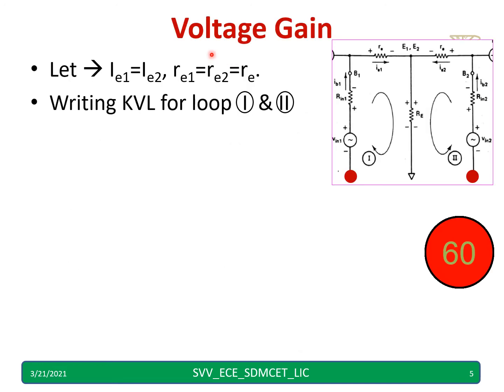Voltage gain equation will derive. Let us assume IE1 equal to IE2, RE1 equal to RE2 equal to RE. Writing KVL for loop 1 and loop 2. Where is loop 1? Take this as loop 1: VIN1, RIN1, RE, RE. Write the equation. VIN1 minus RIN1 IB1 minus RE IE1 minus RE. I have IE1 plus IE2 - both currents are flowing here.